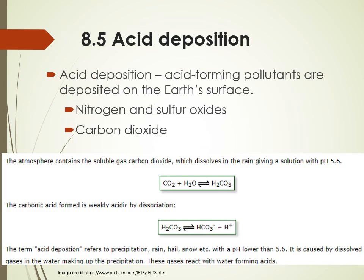So first, let's define what acid deposition is. This is basically talking about acid rain — acid-forming pollutants are being deposited on Earth's surface. They're often released into the atmosphere, where they combine with water vapor and then fall back to the earth as acid rain. Our big culprits are nitrogen oxides and sulfur oxides.